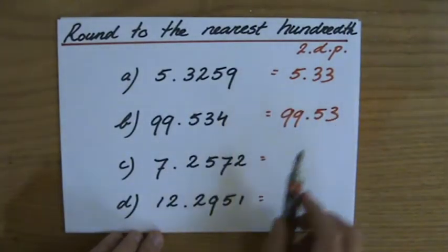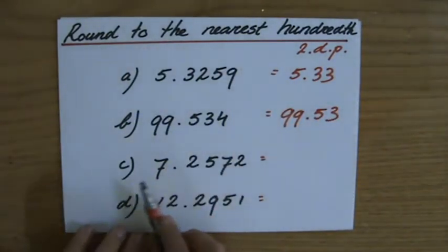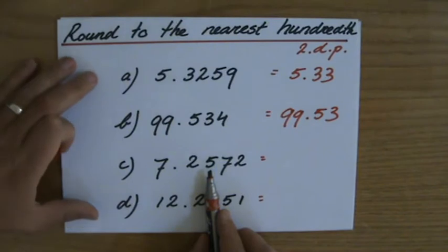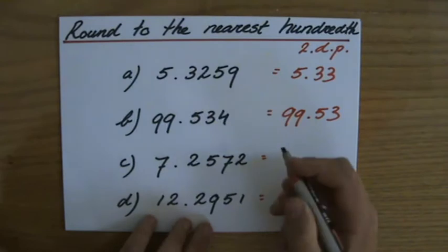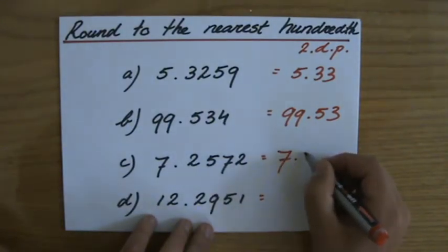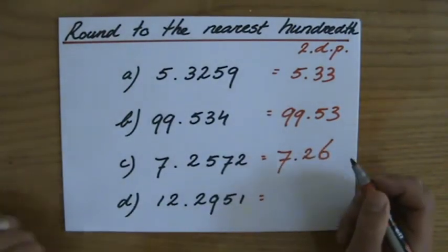Over here, two decimal places to the nearest hundredth. It's the 5, stays at 5 or goes up to a 6. Depends on the next number, which is higher than a 5. So it goes to a 6. 7.26.